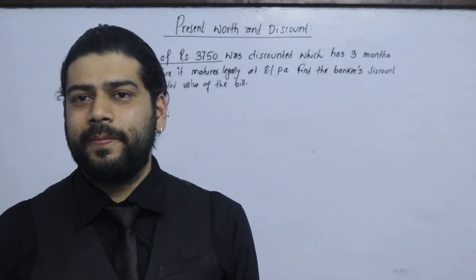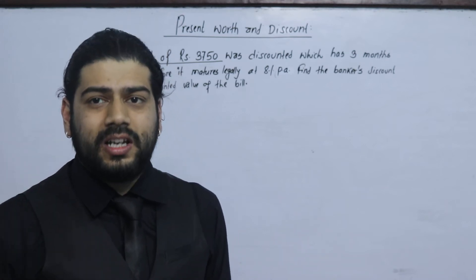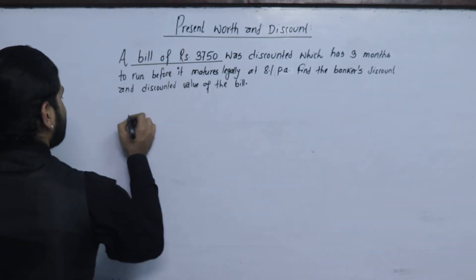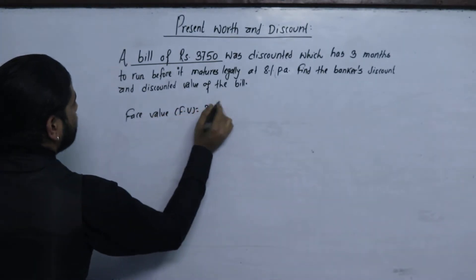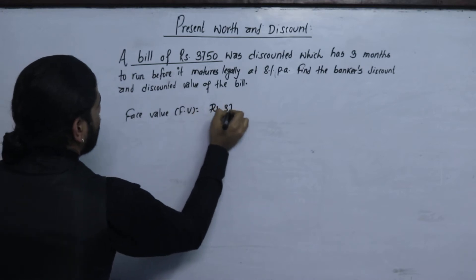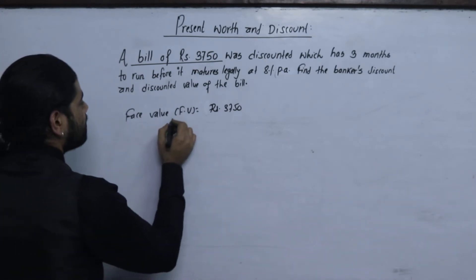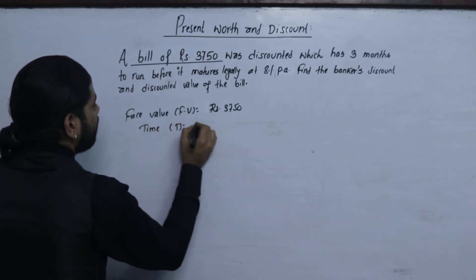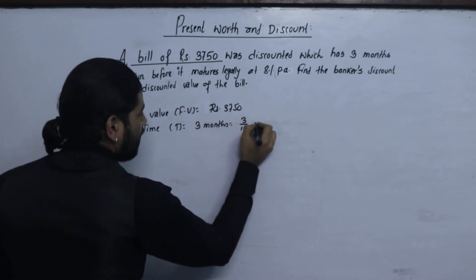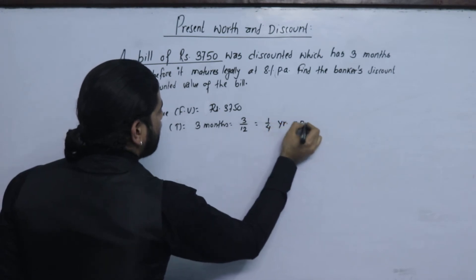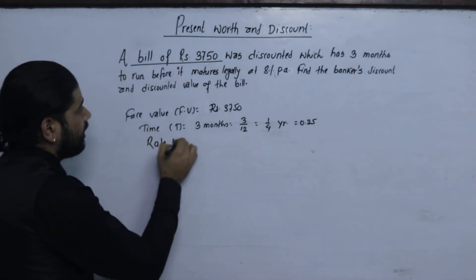In this bill, the face value is Rs.3,750. It was discounted — this is the bank discount — which has 3 months to run before it matures legally. So the time period T is 3 months, which is 3 divided by 12, equal to 1/4 or 0.25 years. The rate R is 8% per annum.